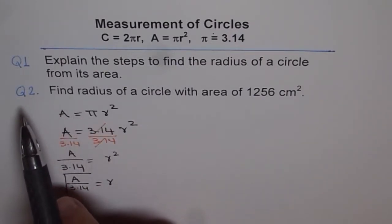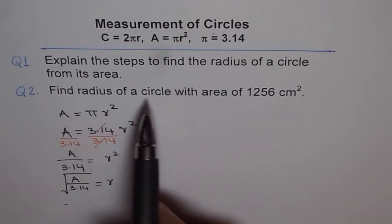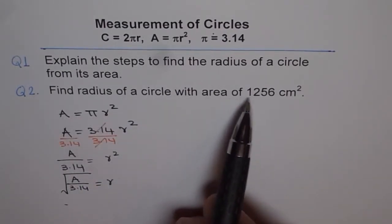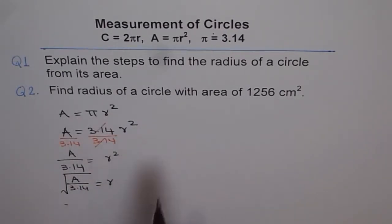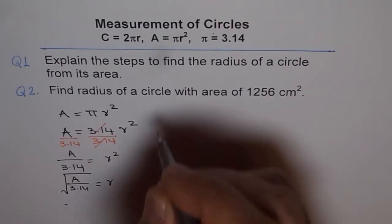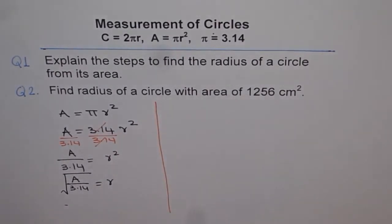Now question 2 is find radius of a circle with area of 1256 cm². So let's do question 2 with the application of this formula.